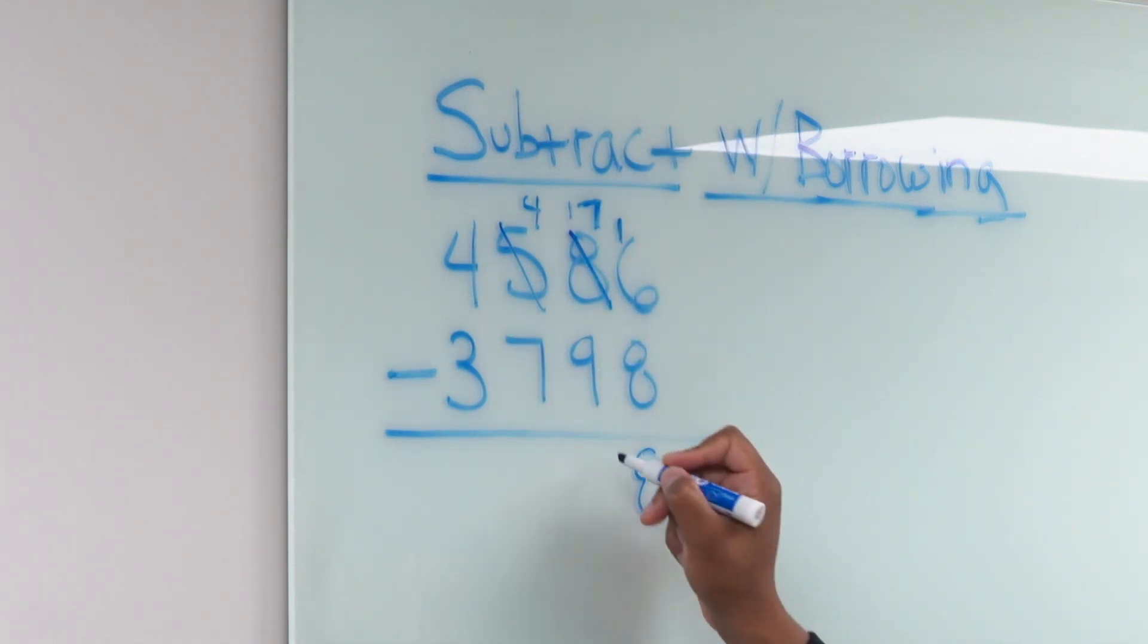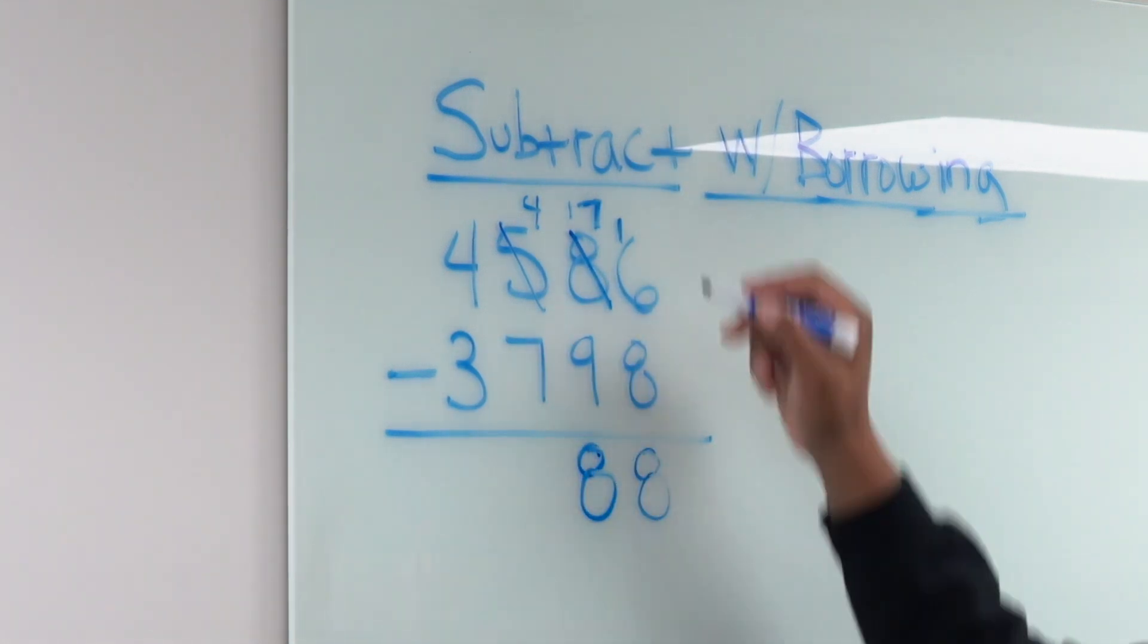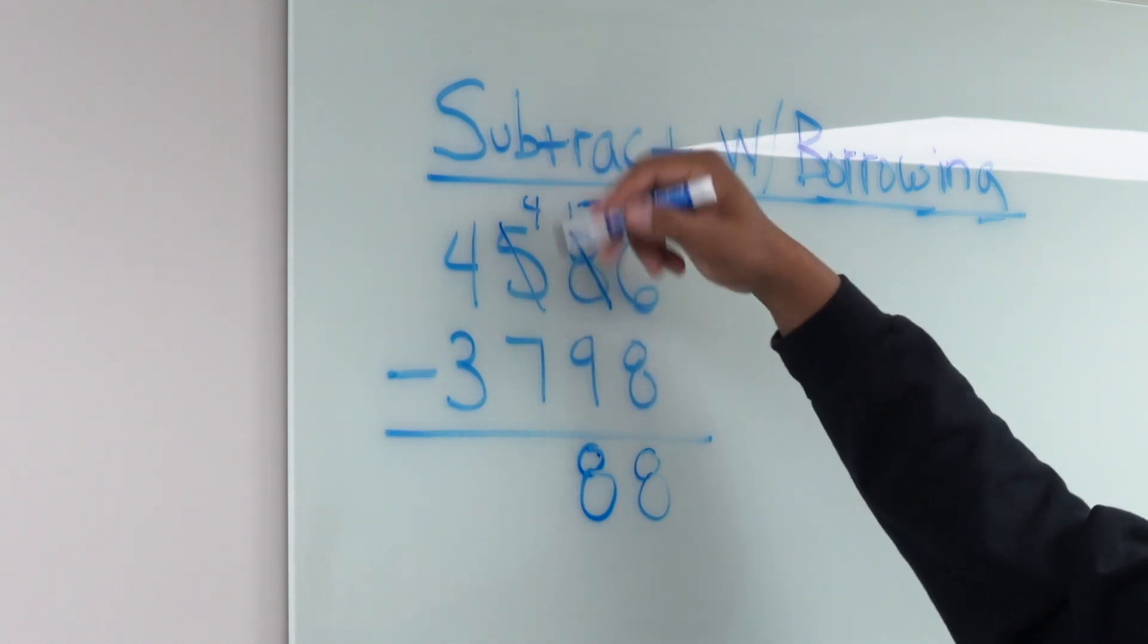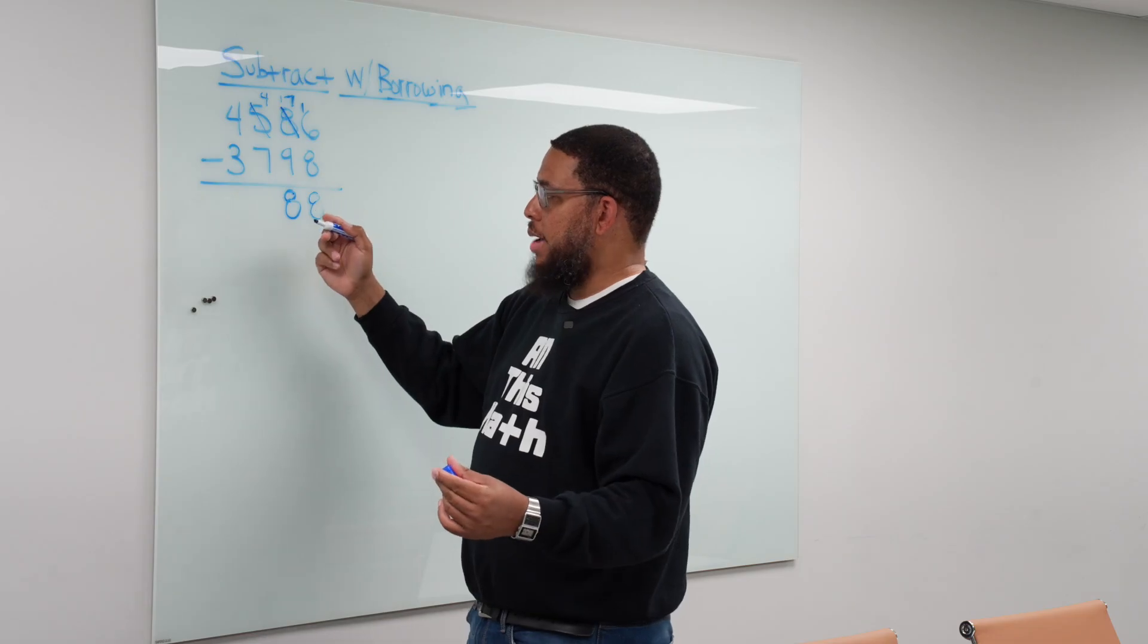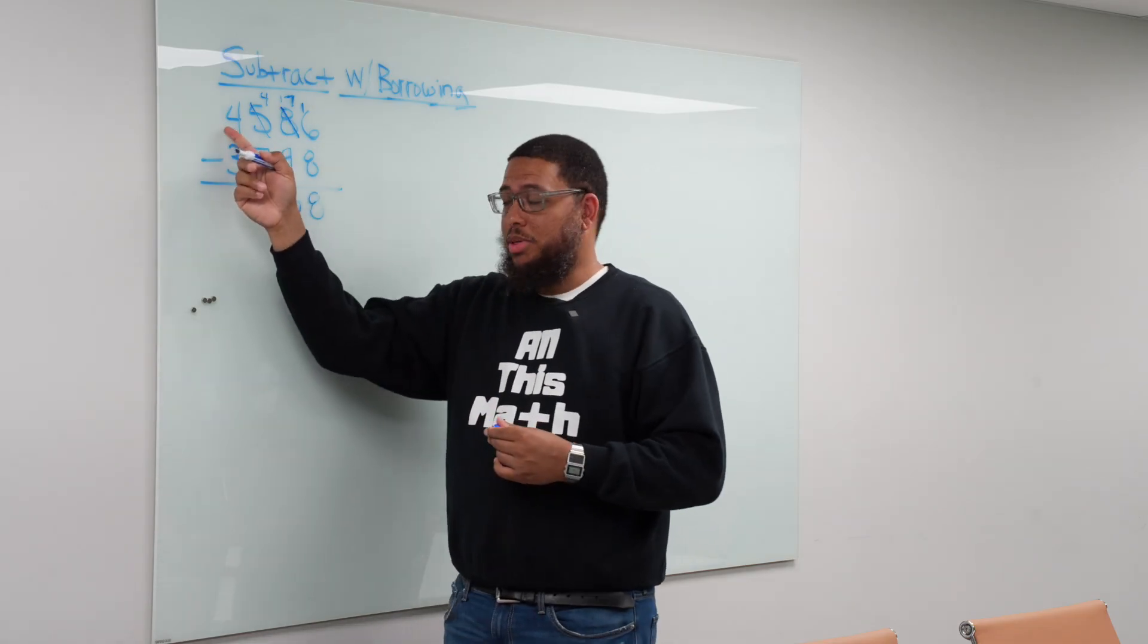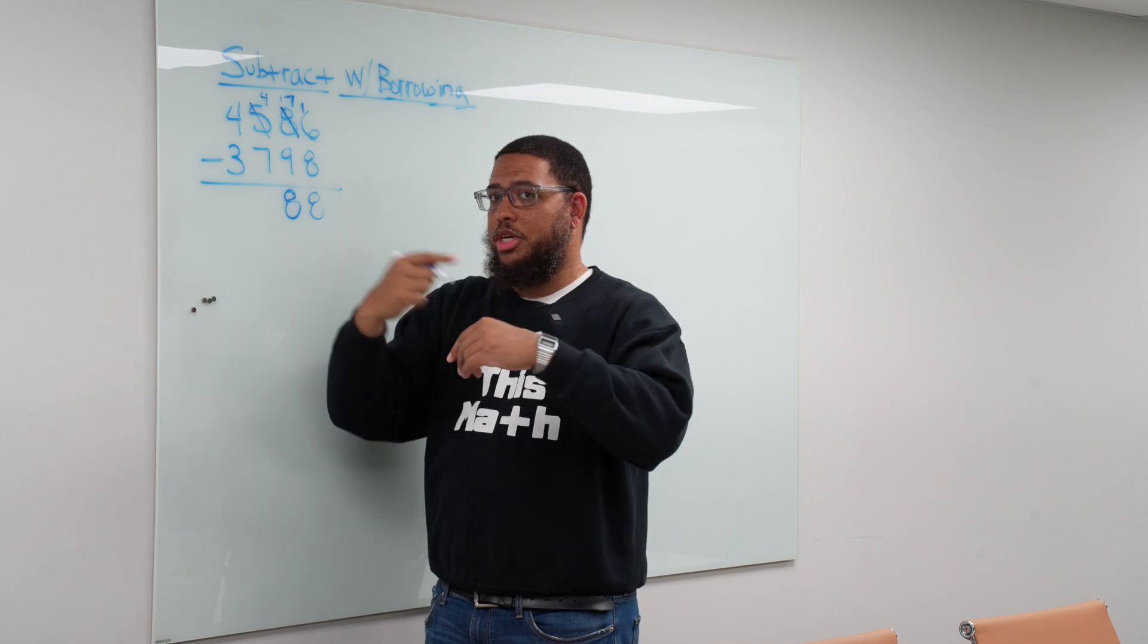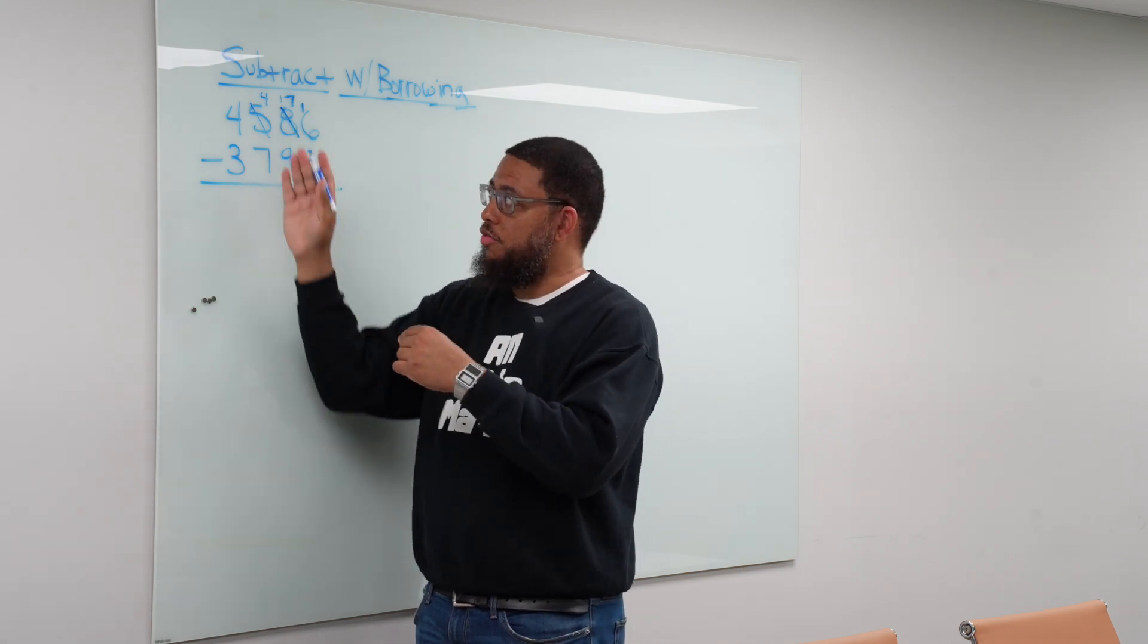We know our subtraction facts. 17 minus 9 is going to be 8. Then we go to the hundreds place. We run into the same problem again. We got 4 minus 7. Four hundreds minus seven hundreds. We don't want that to happen. So we're going to go to the thousands place, and notice the pattern. Notice we keep doing the same thing over and over again just in different place values.